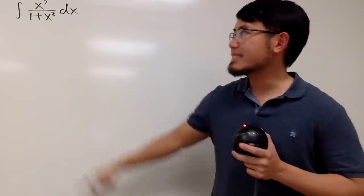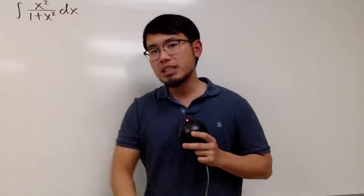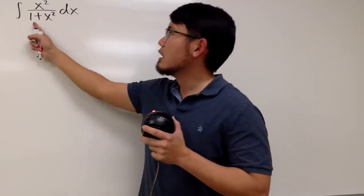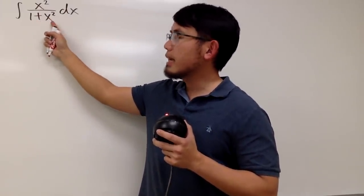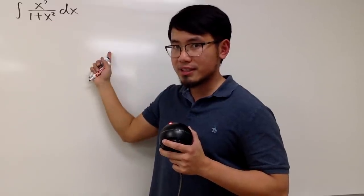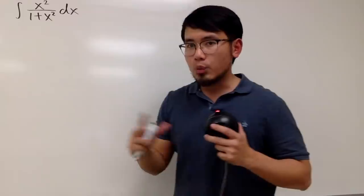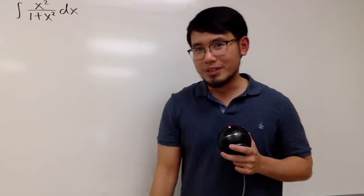First of all, you have to know that u sub is not going to work out nicely, because if you let u equal to the denominator, the derivative of 1 plus x squared is just 2x dx. On the top, you have x squared, so they won't cancel nicely the way that you want it to be.